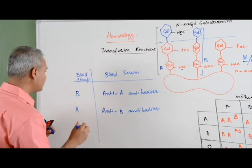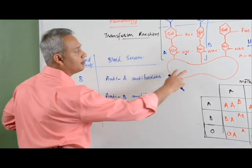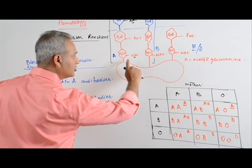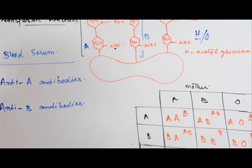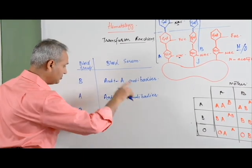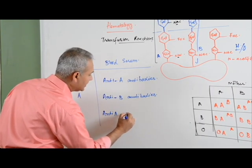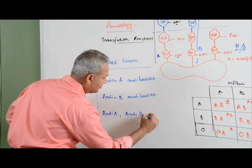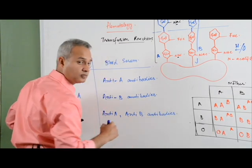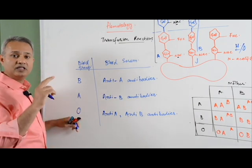What happens with blood group O? Blood group O means my RBCs only have two H antigens — one from mother and one from father. I do not have A and I do not have B. In that case, in my blood serum I develop both anti-A and anti-B antibodies. My serum has antibodies against both antigens.